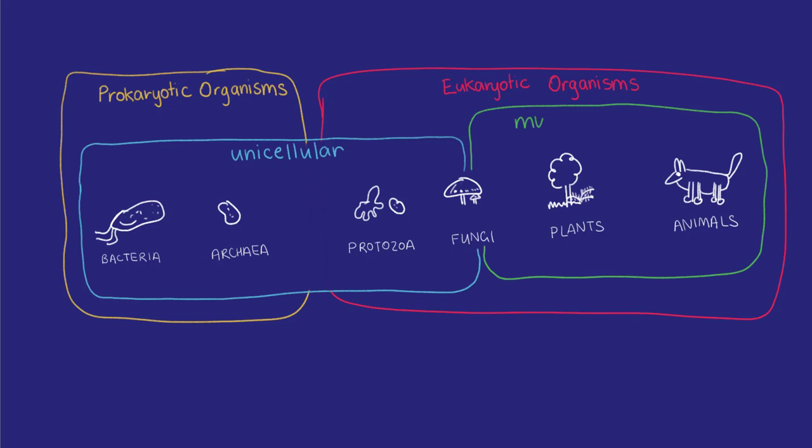Multicellular eukaryotes can work this system even further because they can delegate specific jobs to whole tissues and organs. To do this, they rely on systems between cells to function – like communication systems, transport systems and metabolic systems.